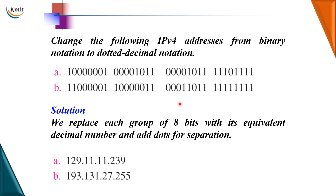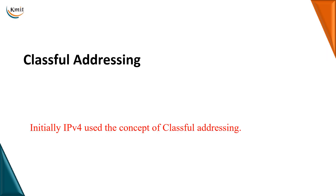You may get a question where you have to convert an IPv4 address from binary to dotted decimal notation. For example, converting the binary segments gives: 129, 11, 11, and 239 — it is a simple binary-to-decimal conversion to obtain the address.